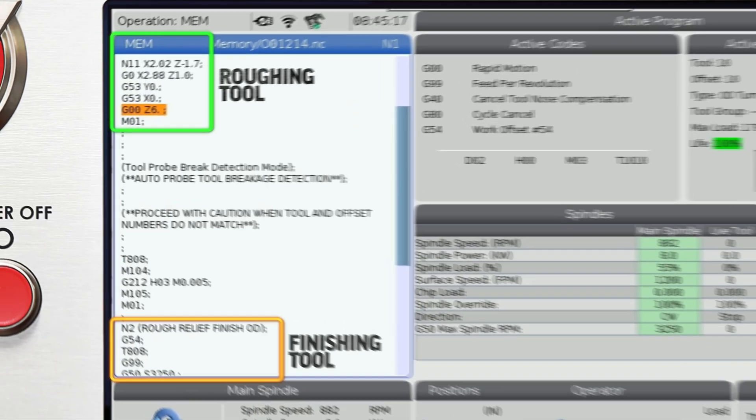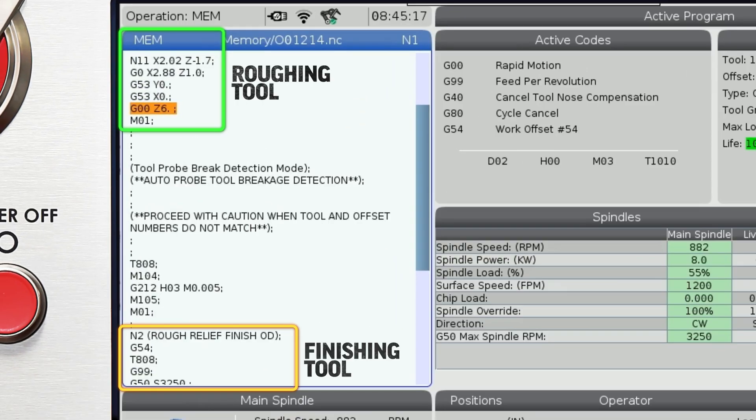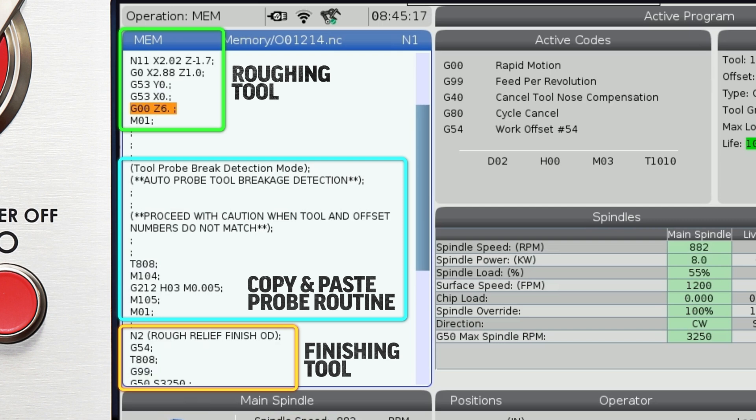And I can copy and paste this automatic check into my program so the machine checks this tool and updates the offset automatically before running a particular operation where I'm concerned about insert wear.